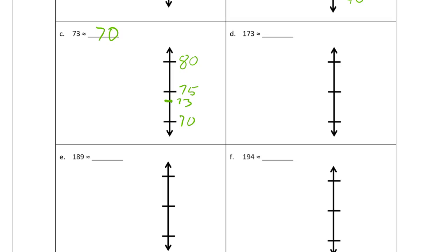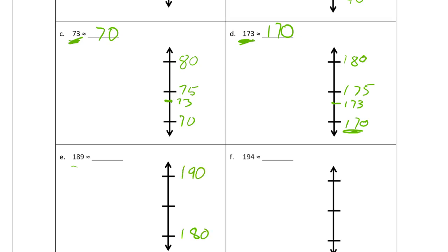Now 173 — rounding to the nearest ten. You may notice this was 73 and this is 173, so the number line looks a lot like the previous one, except now we have 170 instead of 70, and 180 instead of 80. The midpoint is 175, and 173 is just below that, so it's closer to 170. For 189, it's in between 180 and 190, the midpoint is 185, and 189 is just under 190, so it rounds to 190.